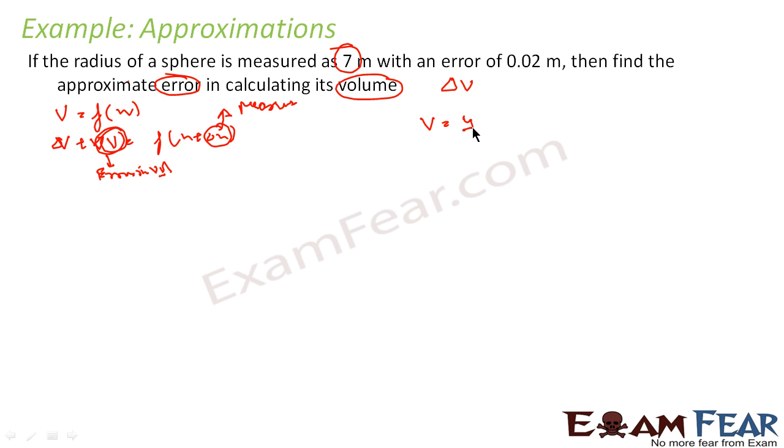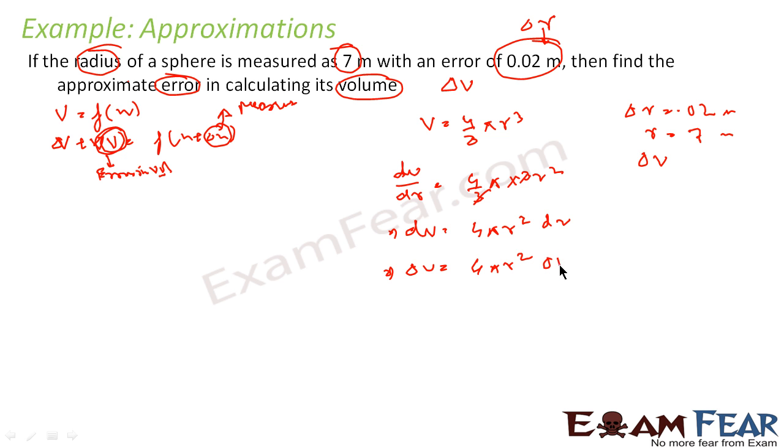So my V is nothing but 4 by 3 pi r cubed. Delta r is known because delta r is the error in measurement of radius. Delta r is 0.02, r is 7, all in meters. I have to find delta V. V is equal to 4 by 3 pi r cubed. dV by dr is nothing but 4 by 3 pi into 3r squared, cancel, so dV is nothing but 4 pi r squared dr, or delta V is nothing but 4 pi r squared delta r.